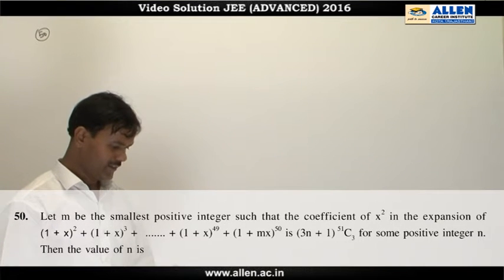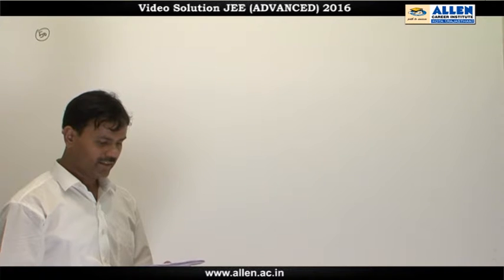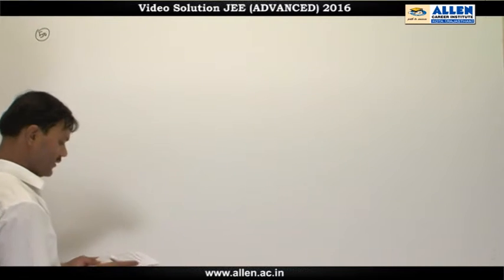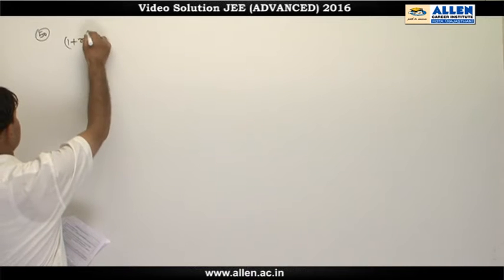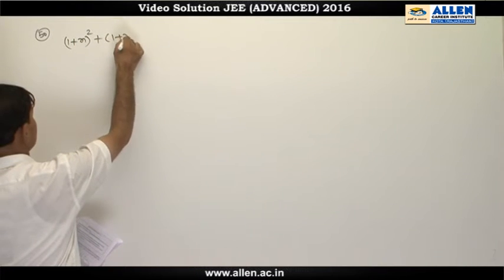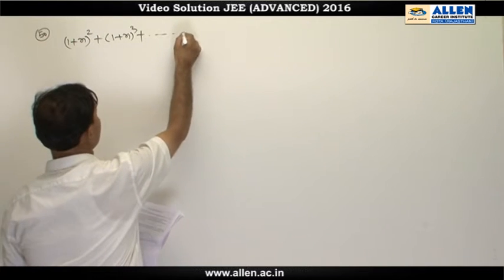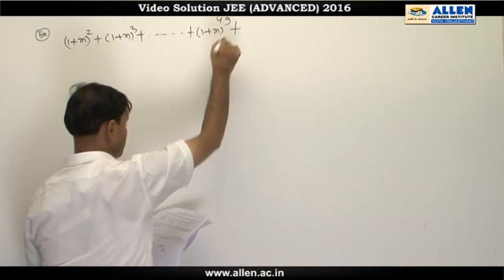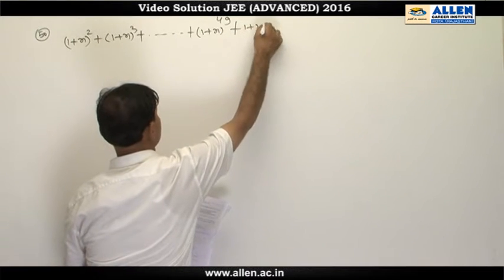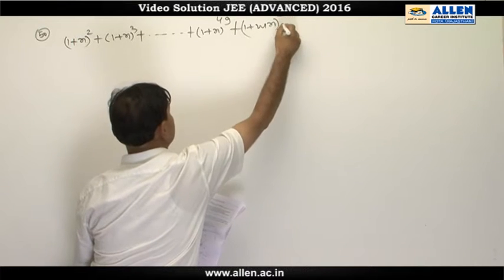In question number 50, m be the smallest positive integer such that coefficient of x² in the expansion of (1+x)² plus (1+x)³ continuing till (1+x)⁴⁹ plus last term is (1+mx)⁵⁰